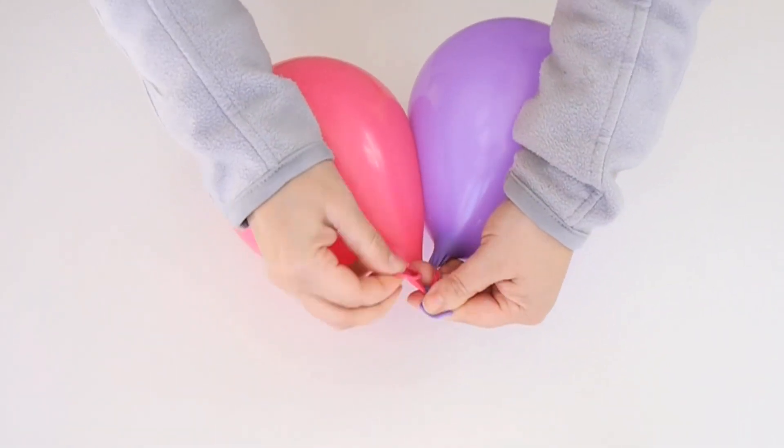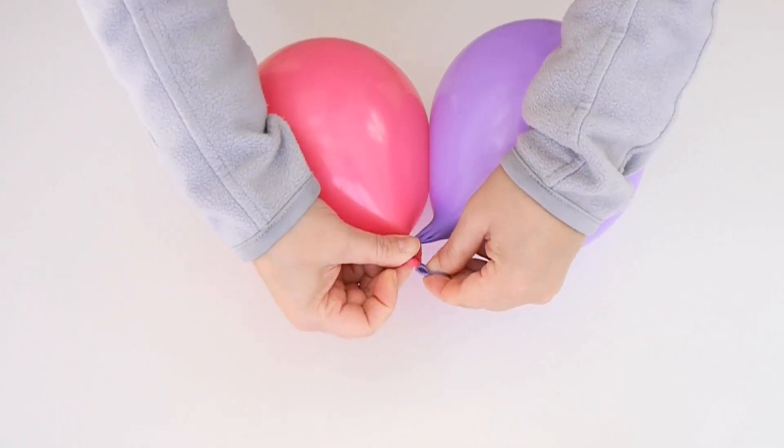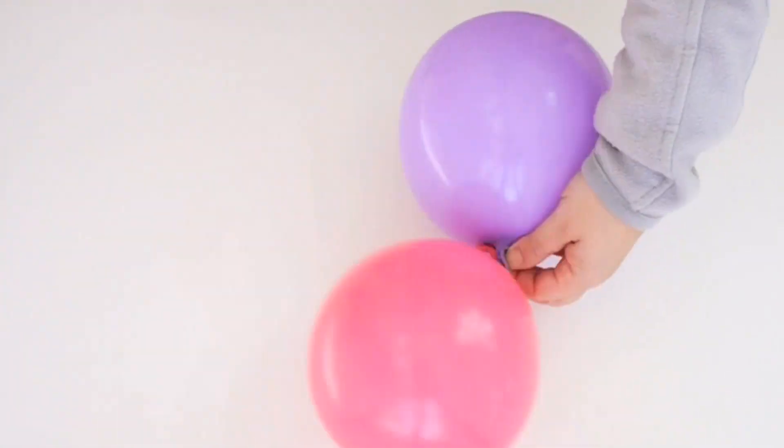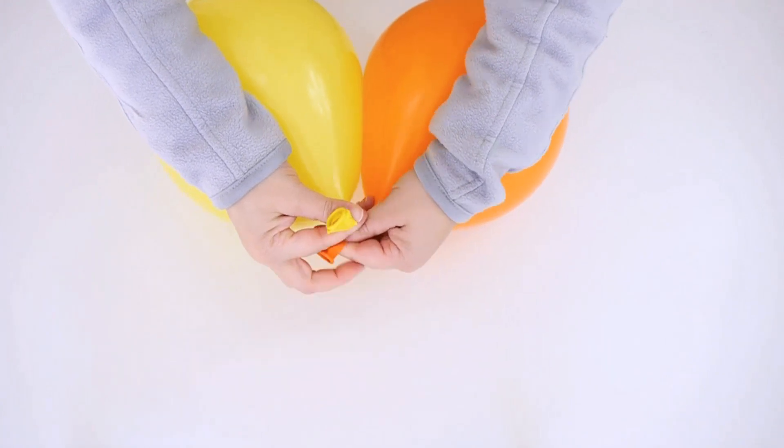There are many ways to create a balloon garland for a party, but this is my way and it's super easy. The first thing you're going to do is inflate your balloons and then tie two balloons together to create a pair.